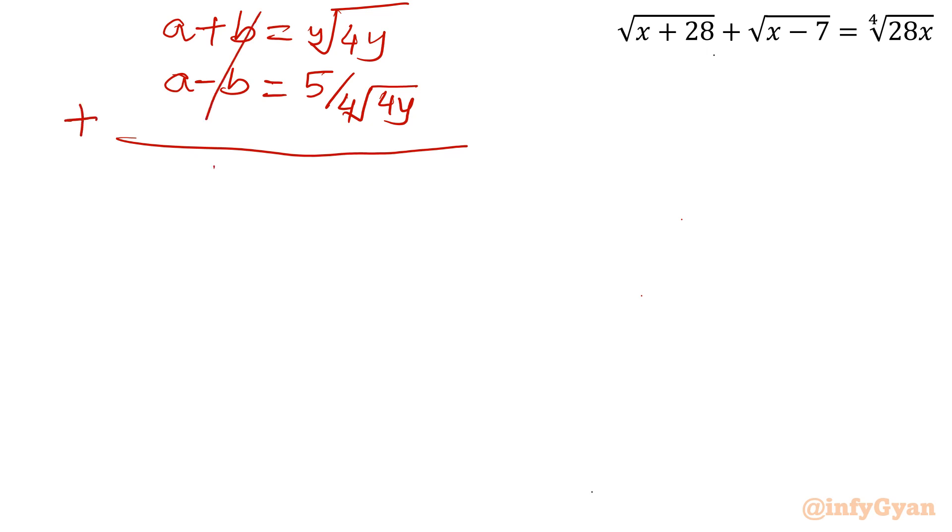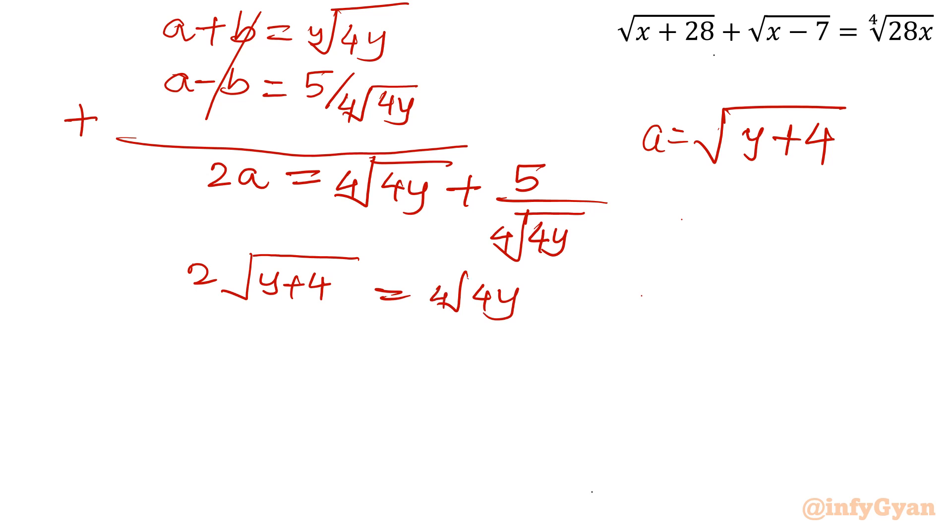Let's solve both equations for a. Add both terms, b will get cancelled out. 2a is equal to fourth root of 4y plus 5 over fourth root of 4y. What is a if you will check? It is square root of y plus 4. So let us put here: 2 times square root y plus 4 equal to fourth root of 4y plus 5 over fourth root of 4y.